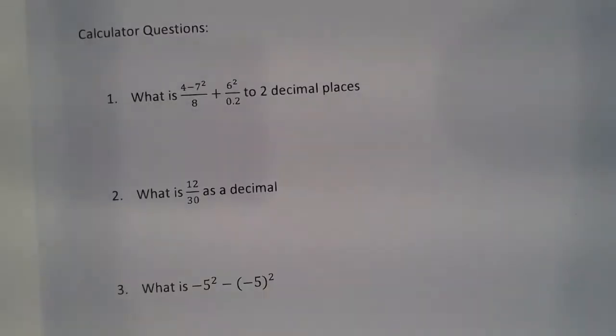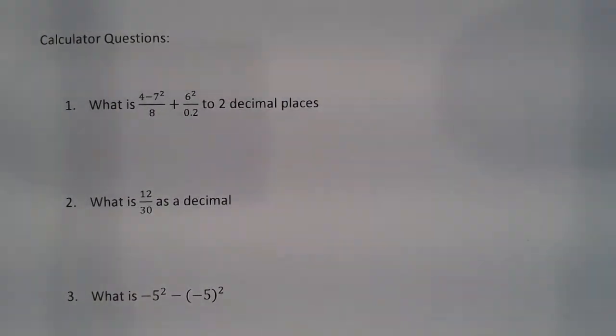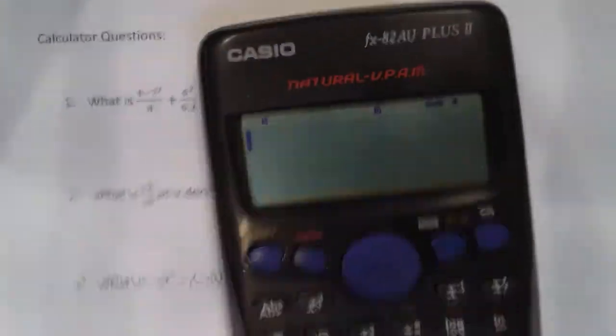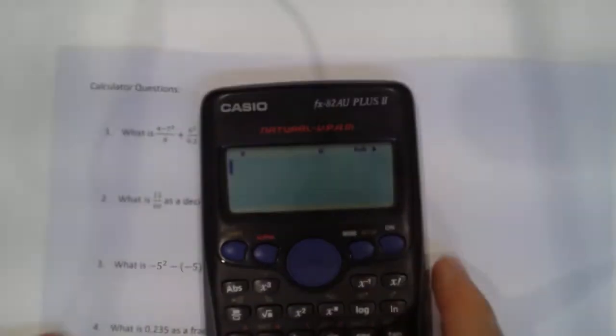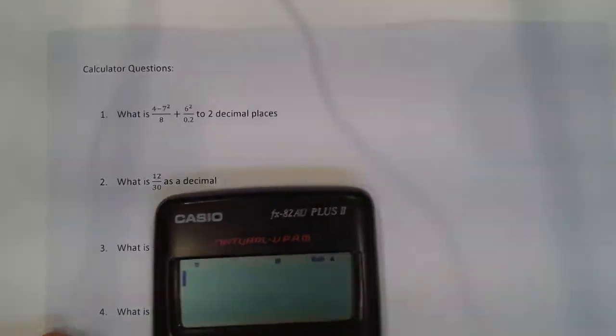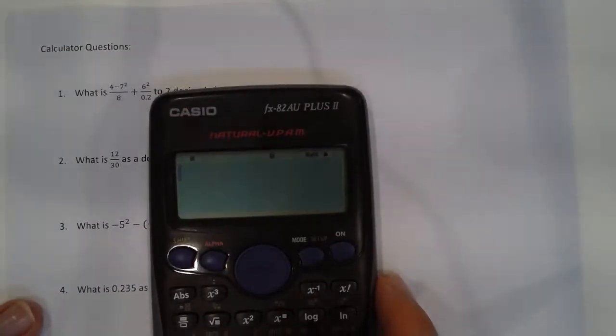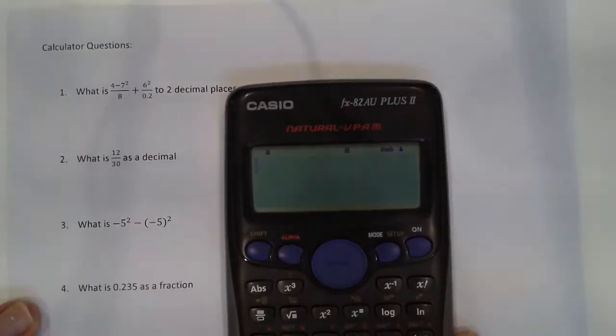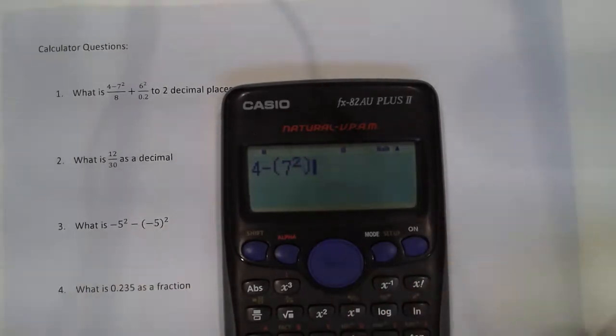Now using your calculator. So here you'll see we've got some very typical calculator questions, and we're going to go through them one at a time. So the first thing we want to look at is this question here. What is 4 minus 7 squared divided by 8? So when I type that in, I'm going to type in 4 minus 7 squared first. So that's the top line, the numerator, equals.